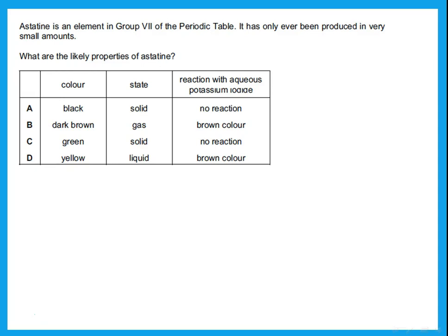The first question says astatine is an element in group 7. It has only ever been produced in very small amounts. What are the likely properties of astatine?